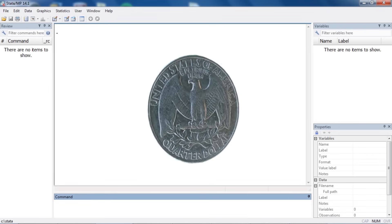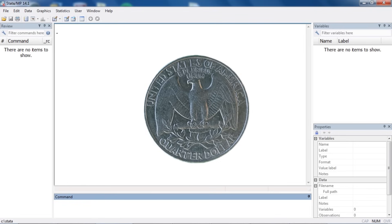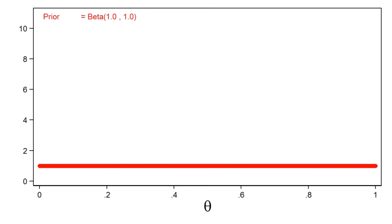Here I have an American quarter. This side is often called the head side, and the other side is called the tail side. If I toss the coin in the air, it must land on either the head side or the tail side, and we could use theta to denote the probability that the coin lands with the head side facing up.